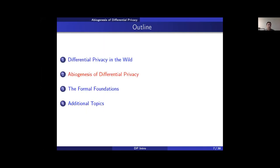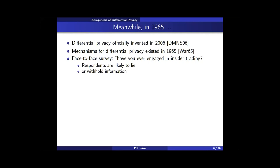Now let's build up some intuition about what differential privacy is and how it actually protects privacy. Algorithms for differential privacy are called mechanisms — think of a mechanism as an algorithm you run on your data to produce privacy-preserving outputs. Even though differential privacy was officially invented in 2006, mechanisms for differential privacy existed much earlier.